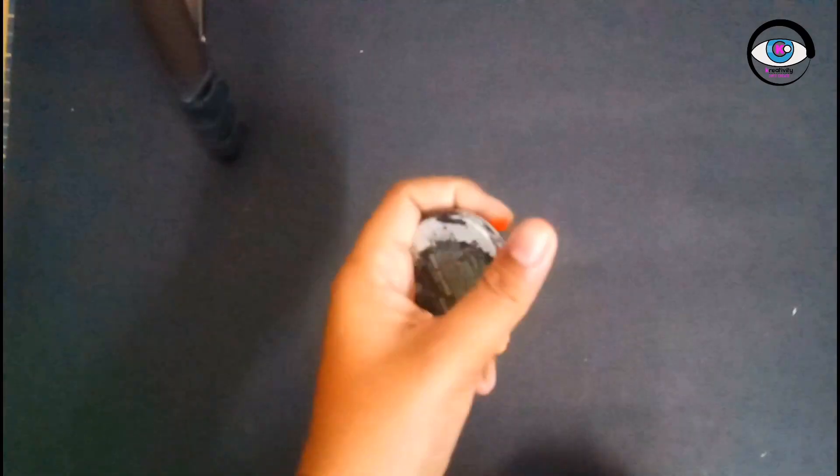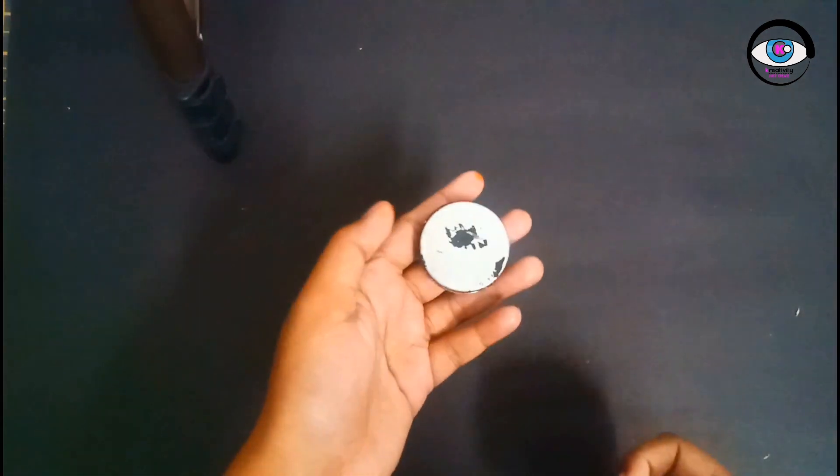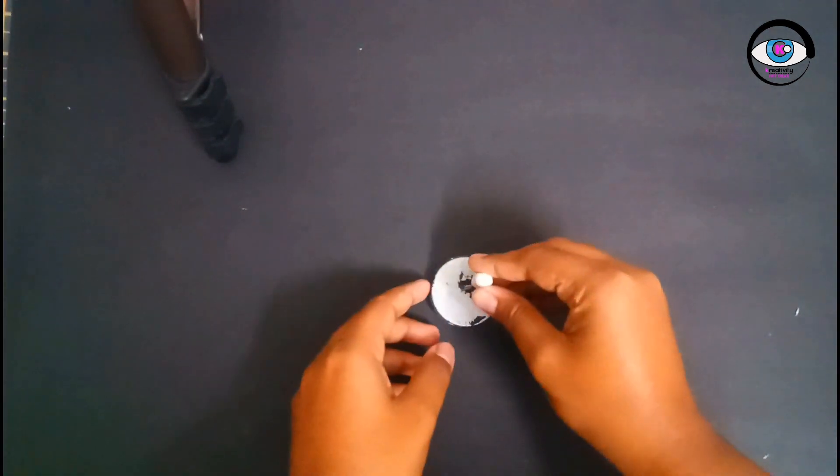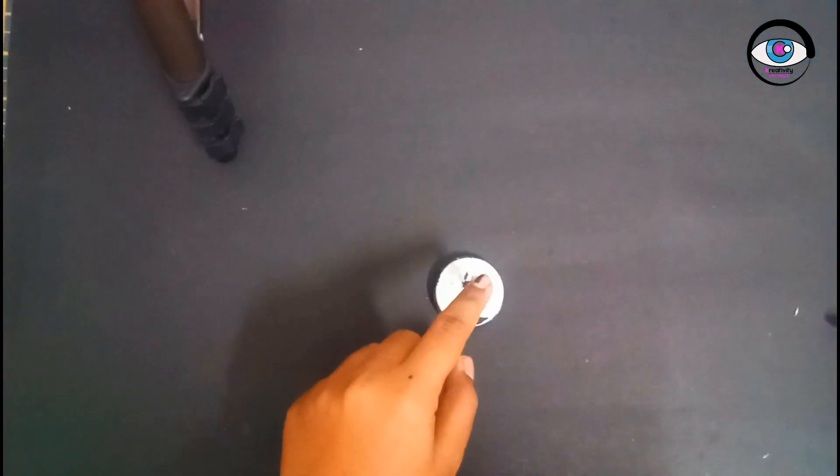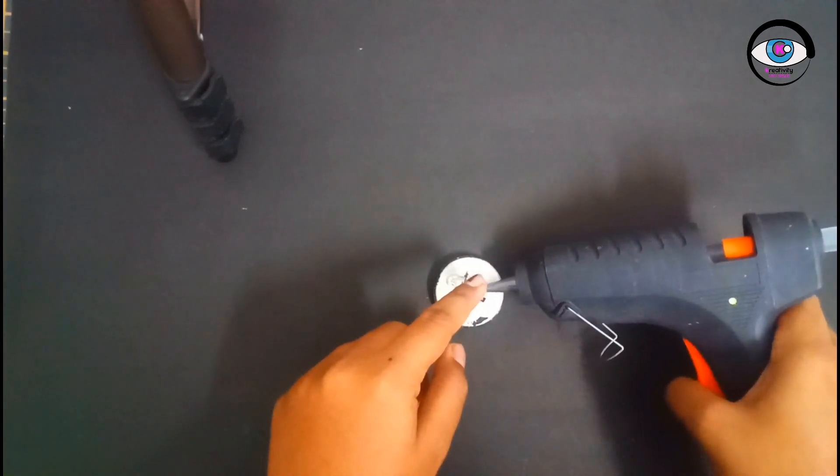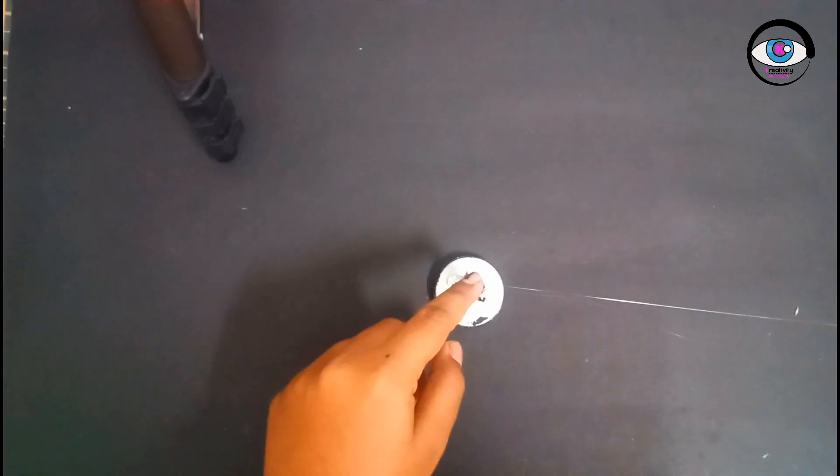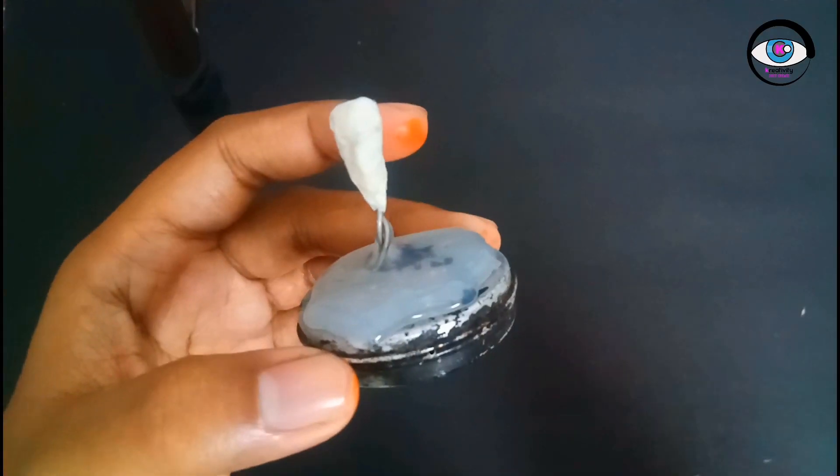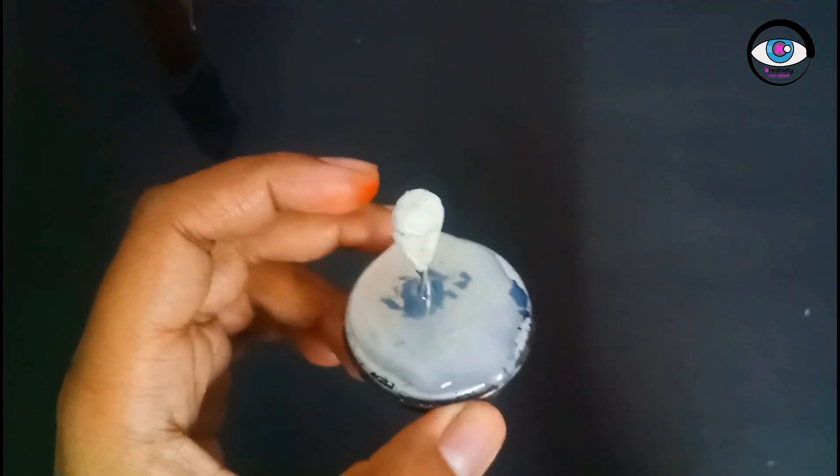After that, take a thin wire like this and attach the bent wire structure to it using hot glue. Then cover it with tissue paper.